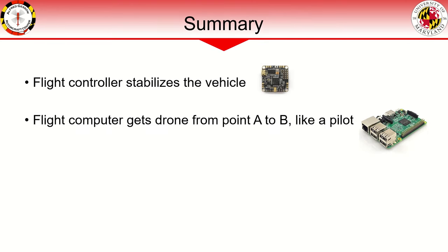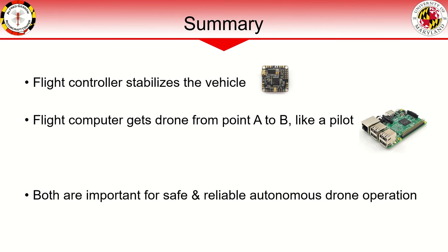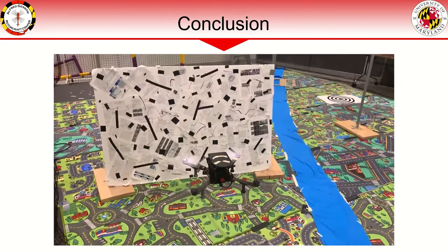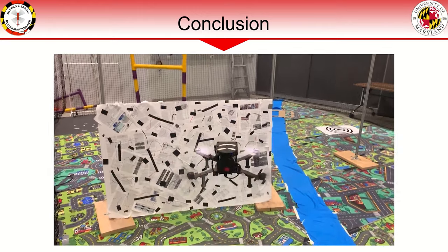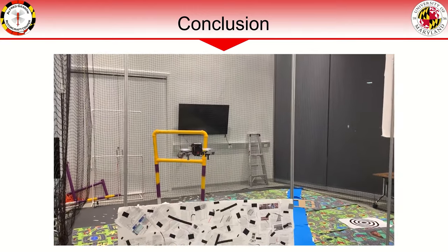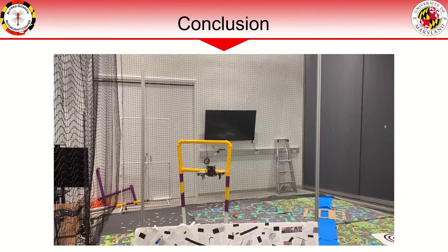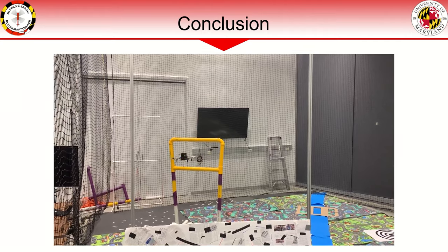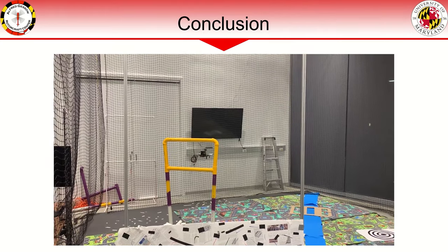To answer our original question: the flight controller is a dedicated board to simply stabilize the vehicle, whereas the flight computer performs all the onboard decision-making and sensing, much like a pilot. Both are very important for safe and reliable autonomous drone operation. This was a very broad overview of some of the things going on inside an autonomous drone and is by no means comprehensive. I hope you've learned something and now have a better understanding of the topics needed to create a fully autonomous drone. If you're interested in more of the nitty gritty, check out my other video on a fully autonomous drone completing an obstacle course and how we did it.